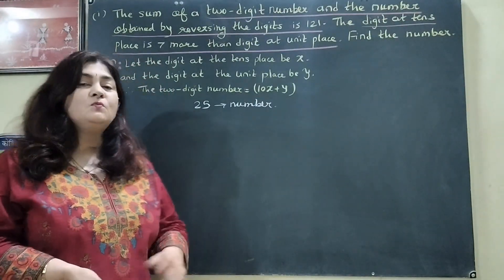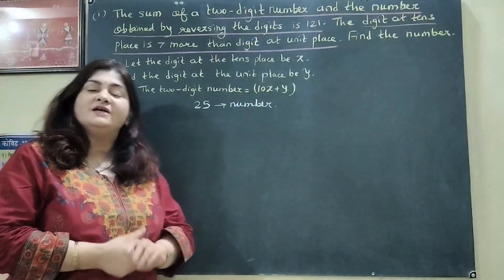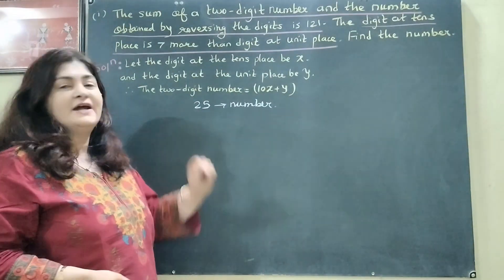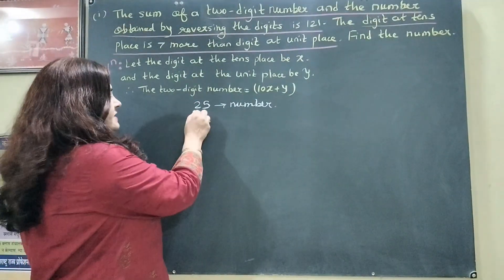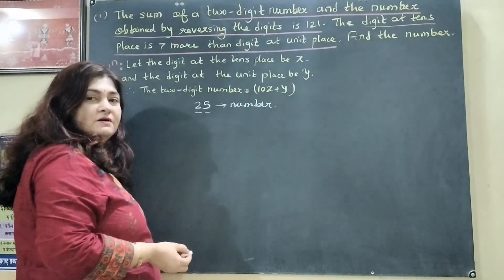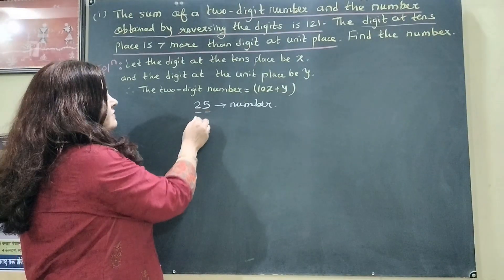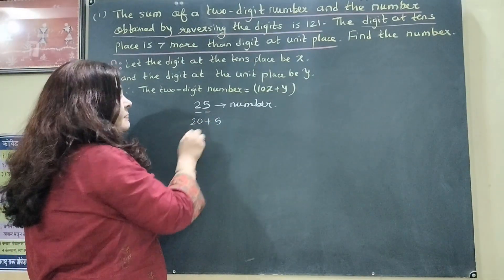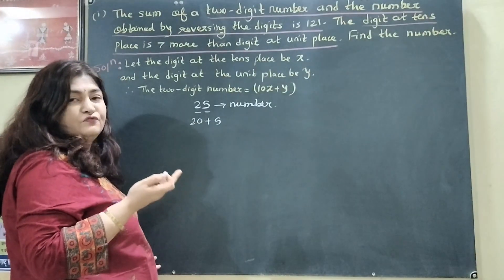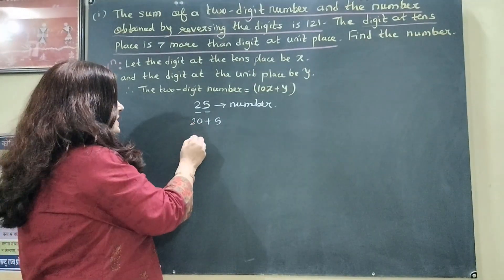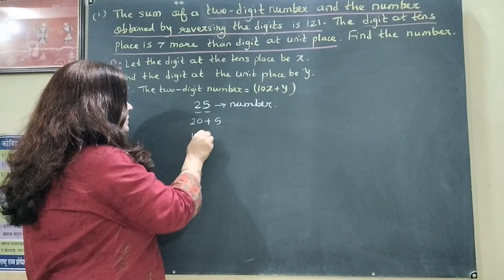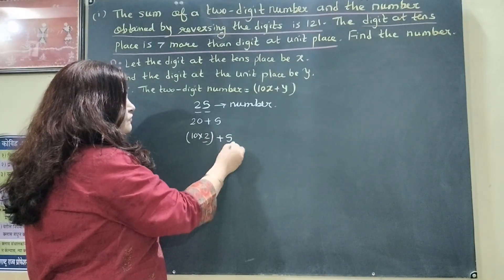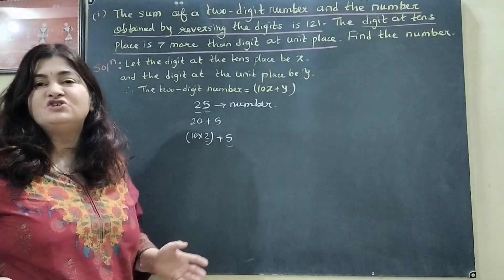Let us assume a two-digit number 25. So 25 is a number and it has two digits: 2 and 5. 2 is at the 10th place and 5 is at the units place. We can write it as 20 plus 5, which is the expanded form of 25. And in place of 20 I can write 10 into 2 plus 5. So here 2 and 5 are my two digits.